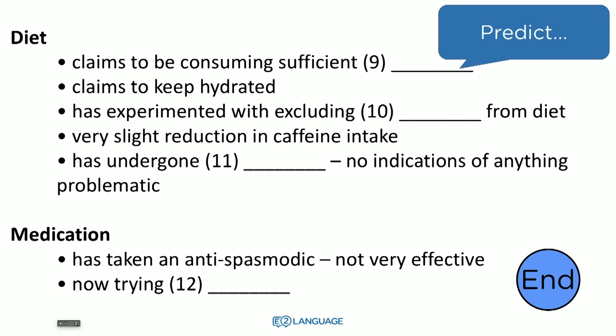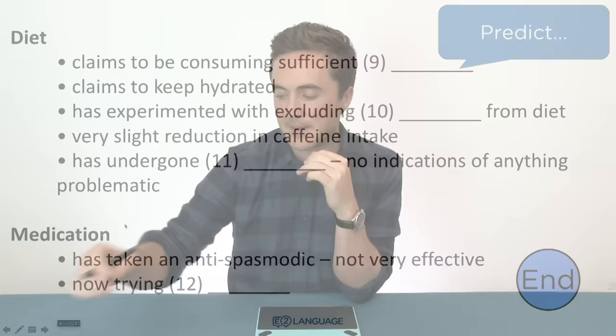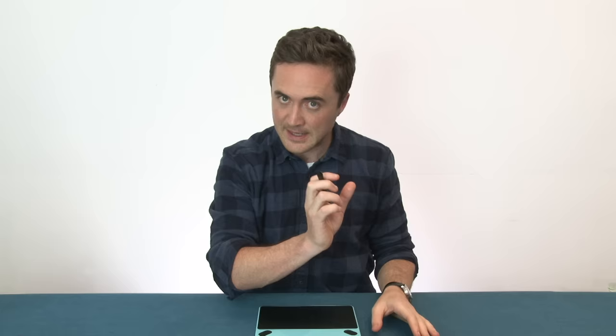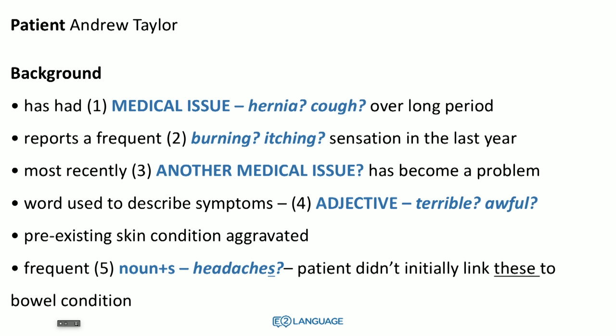Hopefully you also paid attention to the subtitles — for example, 'now trying' tells you it's going to be a type of medication. Thirty seconds goes very quickly when you're trying to predict what type of word might fit those gaps. You have to read through it efficiently and rapidly. Let me show you what my predictions were. So number one: 'has had over a long period' — it's going to be a medical issue, like a hernia, cough, or asthma.